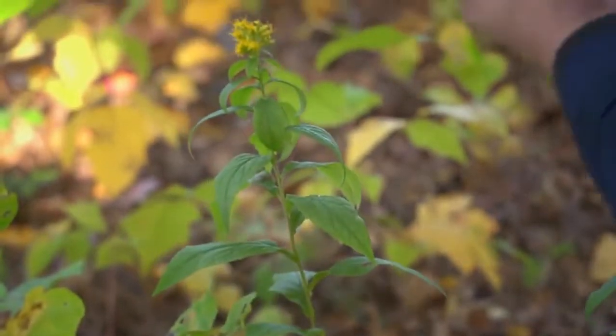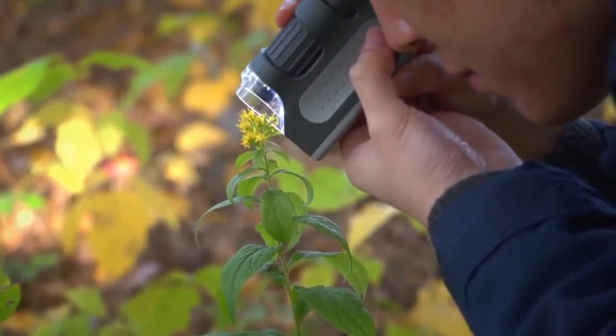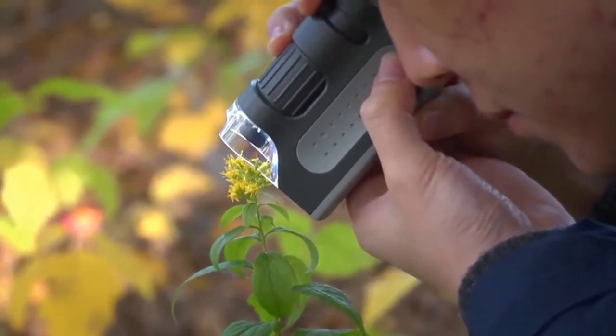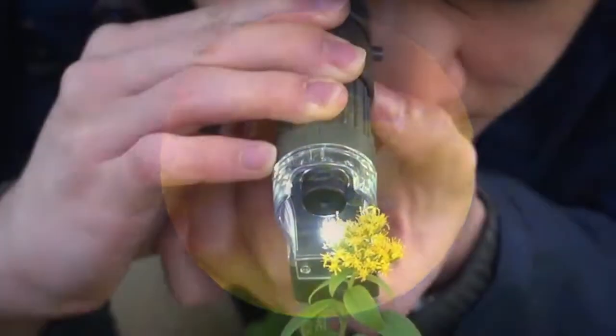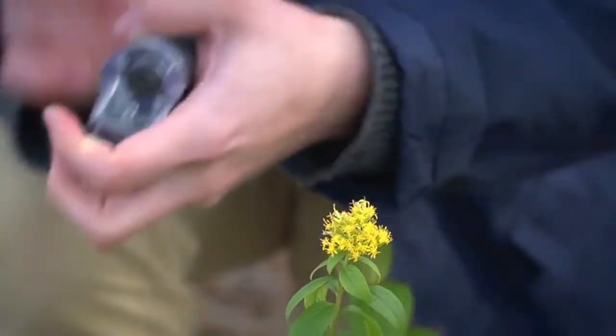This is one impressive little microscope. It actually has a range from 60 to 120 power which is huge. With this you can see things that the naked eye just can't. If you enjoy looking at plant life or need a microscope that you can travel with, the micro bright works outside and can be stored right inside your pocket.